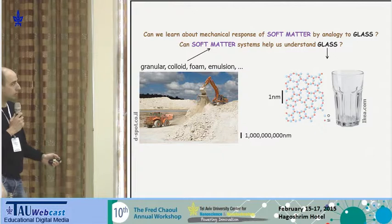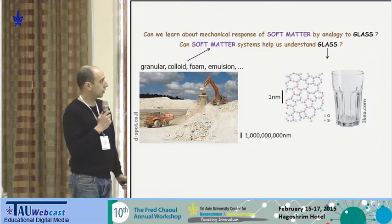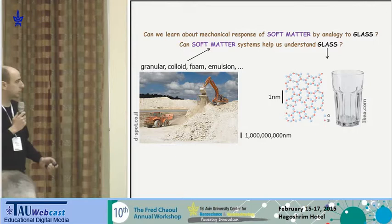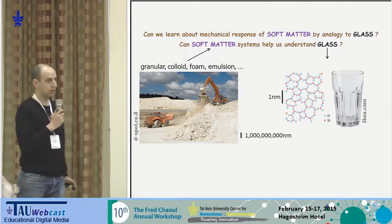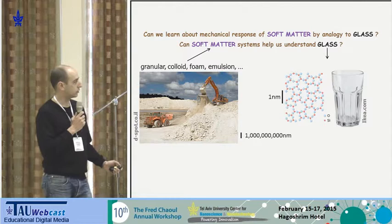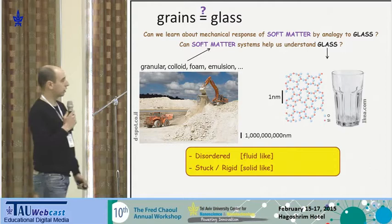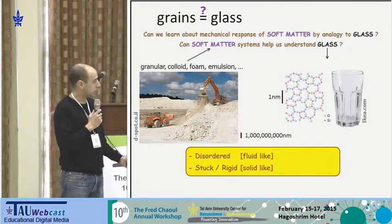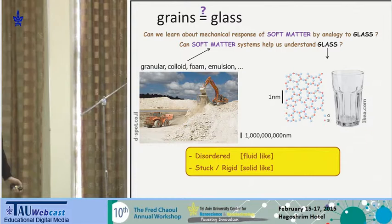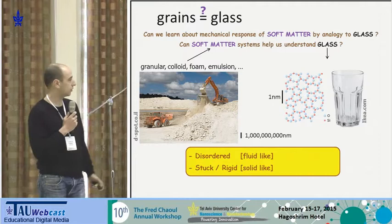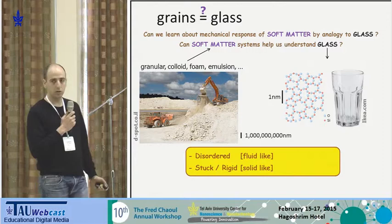Whether we can use any knowledge or understanding of such systems in order to understand glasses. When I say soft matter systems, I have in mind systems comprised of macroscopic building blocks like granular systems of very large solid rocks, colloidal suspensions, foams, emulsions — and I want to convince you there are many connections between such systems and glasses, which have a disordered particle arrangement like a fluid, but dynamics or mechanical rigidity like a solid.